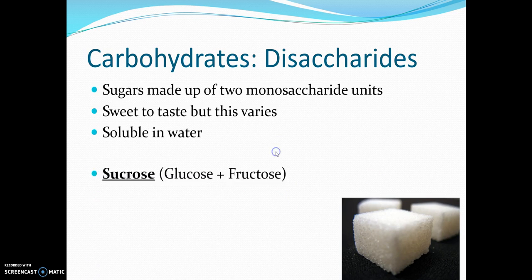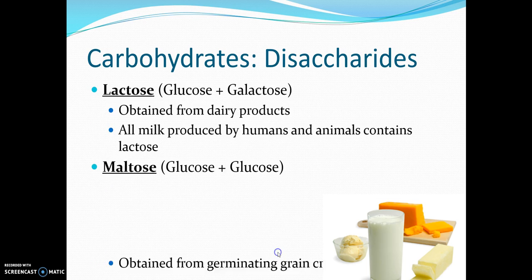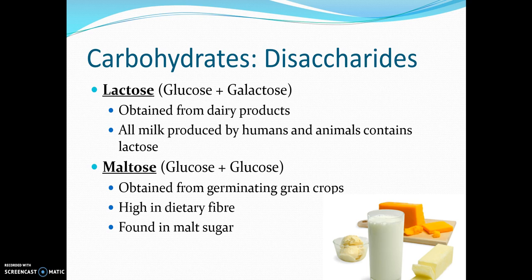Disaccharides are sugars made of two monosaccharide units — sweet to taste and soluble in water. Sucrose is a combination of glucose and fructose, known as table sugar, coming from the cane plant in Australia or from sugar beet, and found in some fruits and vegetables — commonly added to cereal, cooking, and baking. Lactose is a combination of glucose and galactose, obtained from dairy products — all milk produced by humans and animals contains lactose. Maltose is glucose and glucose combined, obtained from germinating grain crops and found in malt sugar.